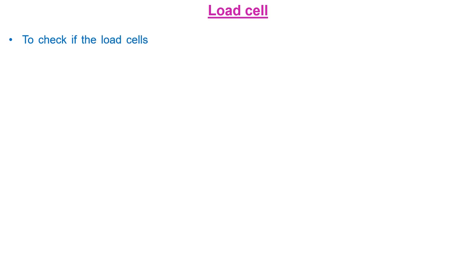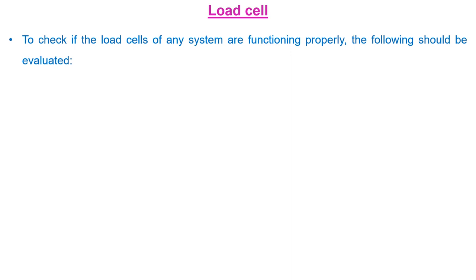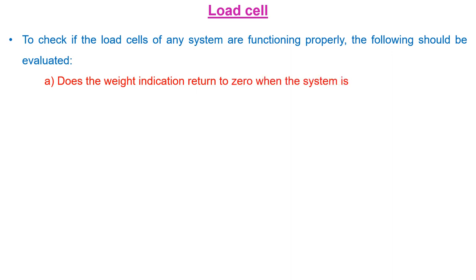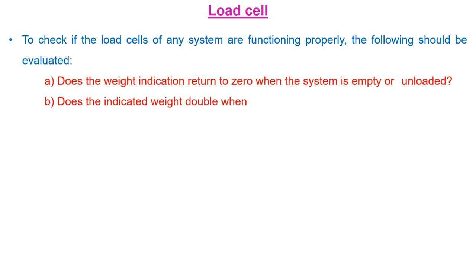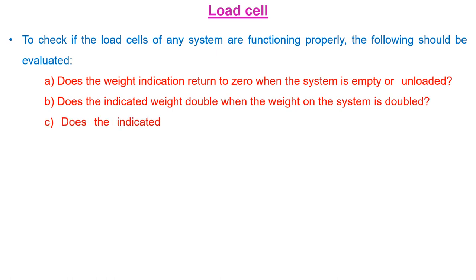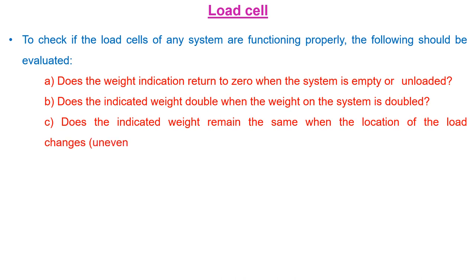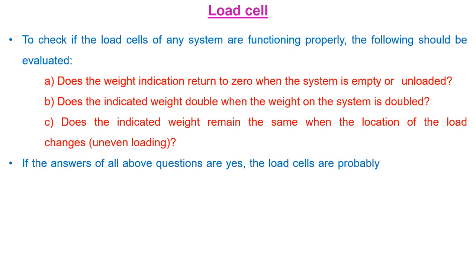To check if the load cells of any system are functioning properly, the following should be evaluated: (a) Does the weight indication return to zero when the system is empty or unloaded? (b) Does the indicated weight double when the weight of the system is doubled? (c) Does the indicated weight remain the same when the location of load changes, that means uneven loading? If the answers to all above questions are yes, the load cells are probably in good condition and need no attention except periodic mechanical cleaning.